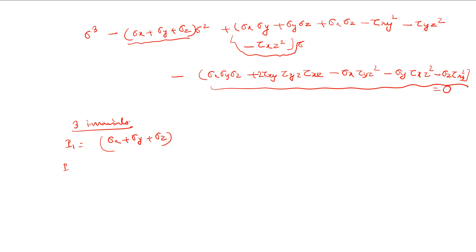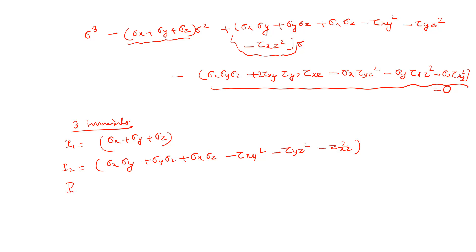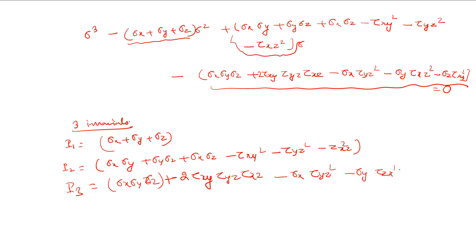The second invariant is I2 = sigma_x·sigma_y + sigma_y·sigma_z + sigma_x·sigma_z - tau_xy^2 - tau_yz^2 - tau_xz^2. The third invariant is I3 = sigma_x·sigma_y·sigma_z + 2·tau_xy·tau_yz·tau_xz - sigma_x·tau_yz^2 - sigma_y·tau_zx^2 - sigma_z·tau_xy^2. These are the three invariant terms.